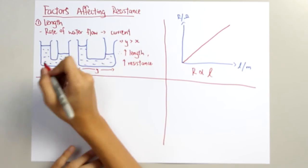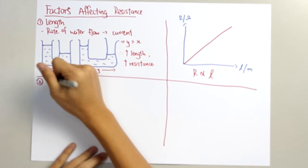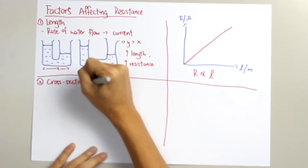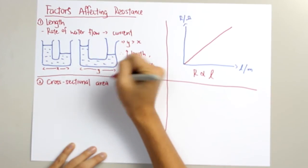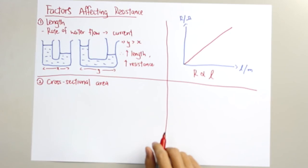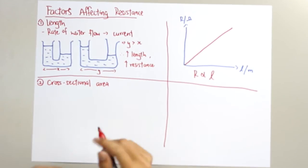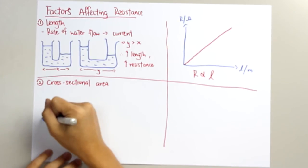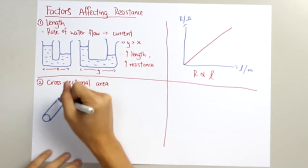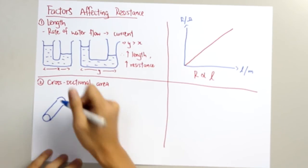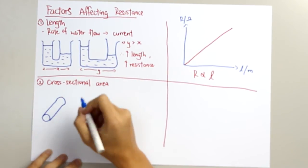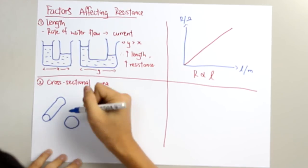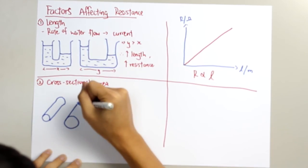Now, the second factor, the cross-sectional area. For this time, I use water pipes to help you all understand better. First, I draw a narrow water pipe. Second, I draw a wider water pipe.